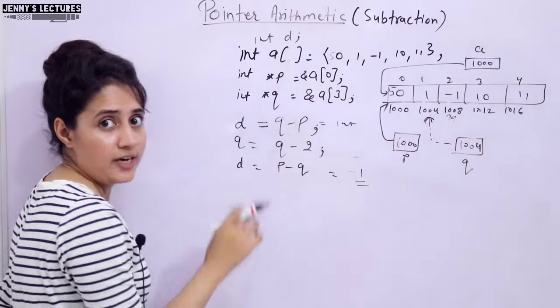Also, if you take two pointers P and Q pointing to two different arrays and do P minus Q or Q minus P, it will give undefined behavior because there is no logical use in finding the difference if both point to different arrays. In the next video, we will see how to apply increment and decrement operators on pointers. See you in the next video.